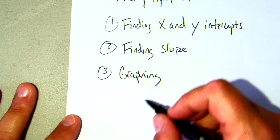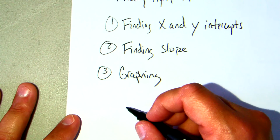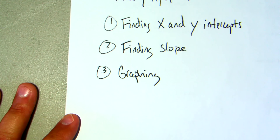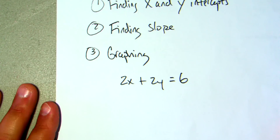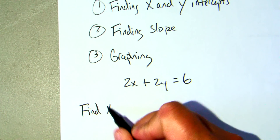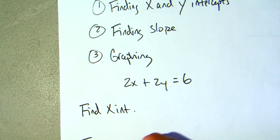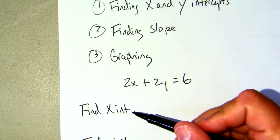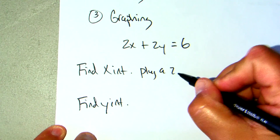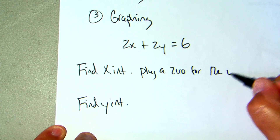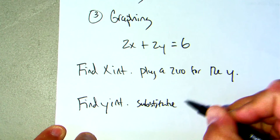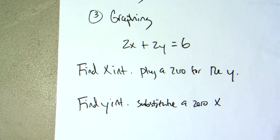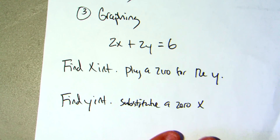I'm going to go over how to find the x and the y intercept. All you must do is — for instance if we had 2x plus 2y equals 6 — if you're looking for the x, plug a zero in for the y, and if you're looking for the y, substitute a zero for the x. Basically, you are eliminating the variable that you are not looking for.